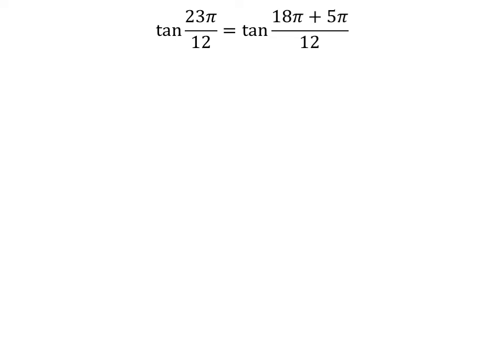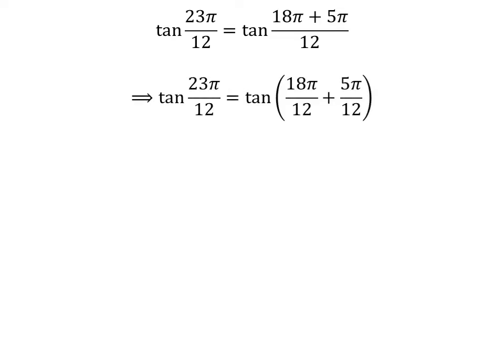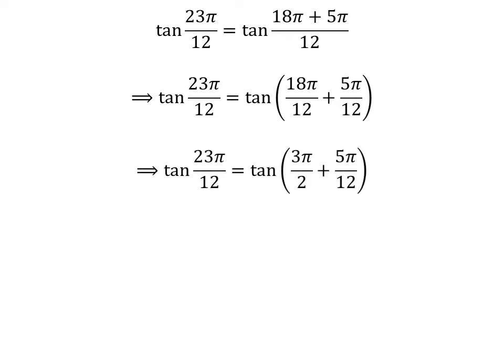23 times pi is equal to 18 times pi plus 5 times pi. So, tangent of 23 times pi upon 12 is equal to tangent of 18 times pi plus 5 times pi upon 12. The fraction can be expressed as the sum of two fractions, giving us tangent of 3 times pi upon 2 plus 5 times pi upon 12.